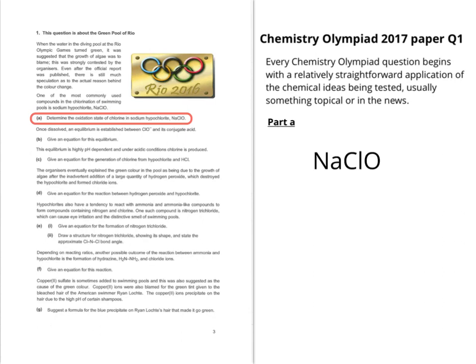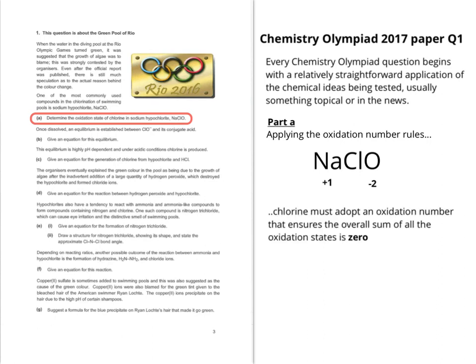Taking the formula of sodium hypochlorite and applying the oxidation number rules: sodium, being a group 1 element, is +1, and oxygen is not in a peroxide here so it's −2. Chlorine has to adopt an oxidation number that ensures the overall sum of all oxidation states is 0. Therefore, the only way this can work is for chlorine to adopt an oxidation number of +1.